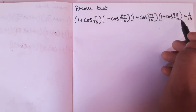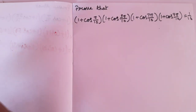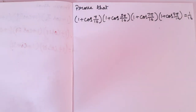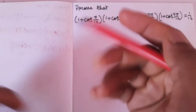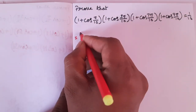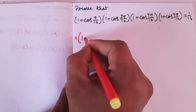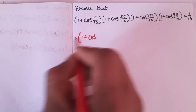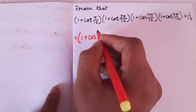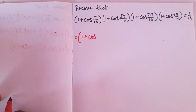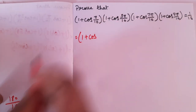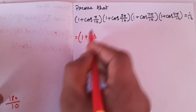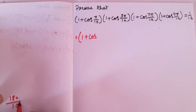First, we move. So, 1 plus cos(pi/10). Pi by 10 — converting: E0, E0 cancel.